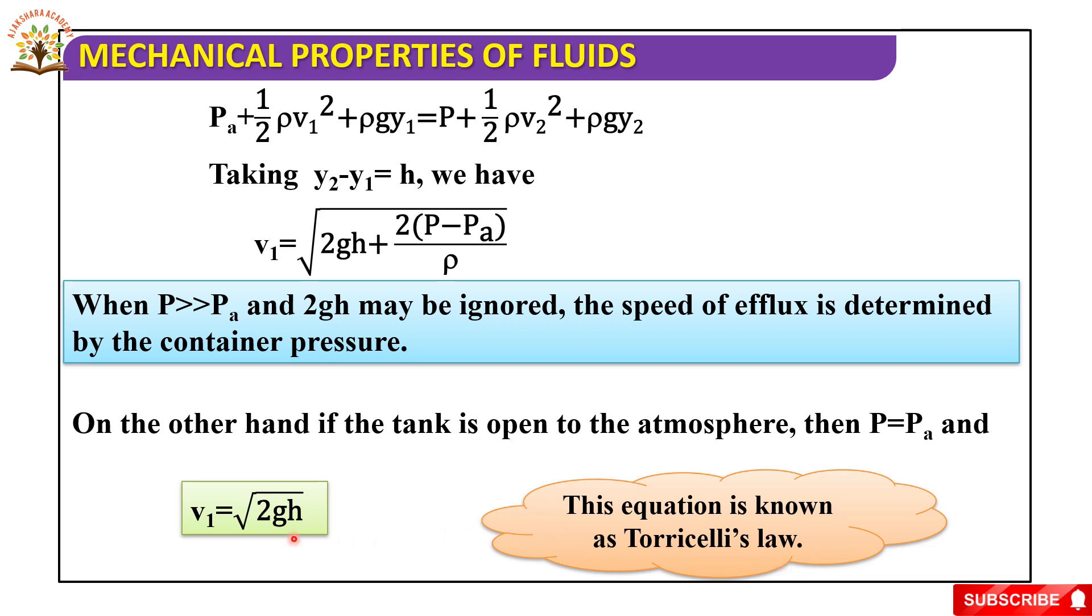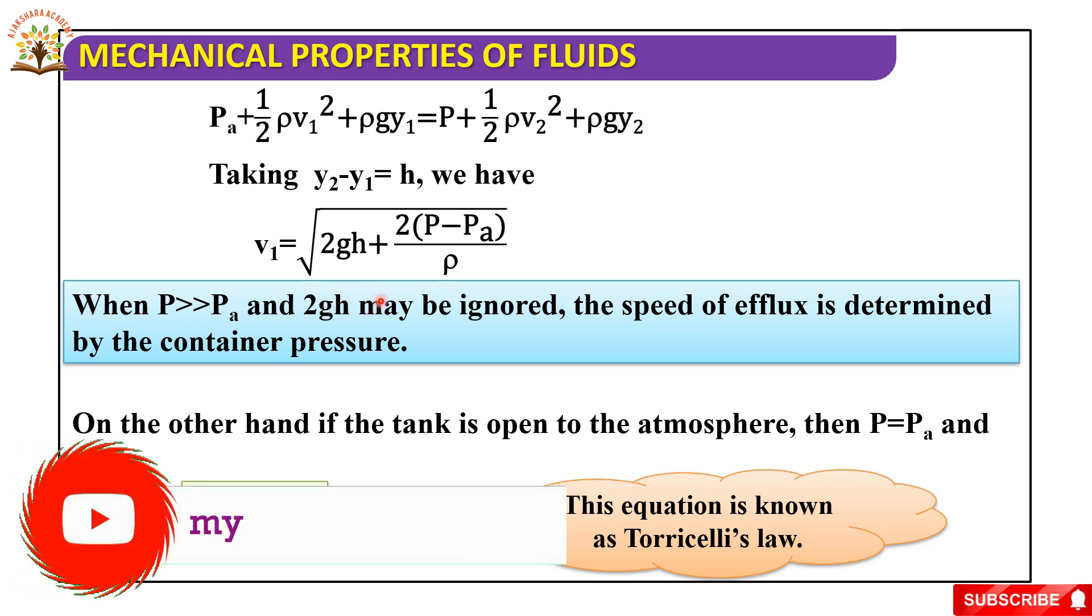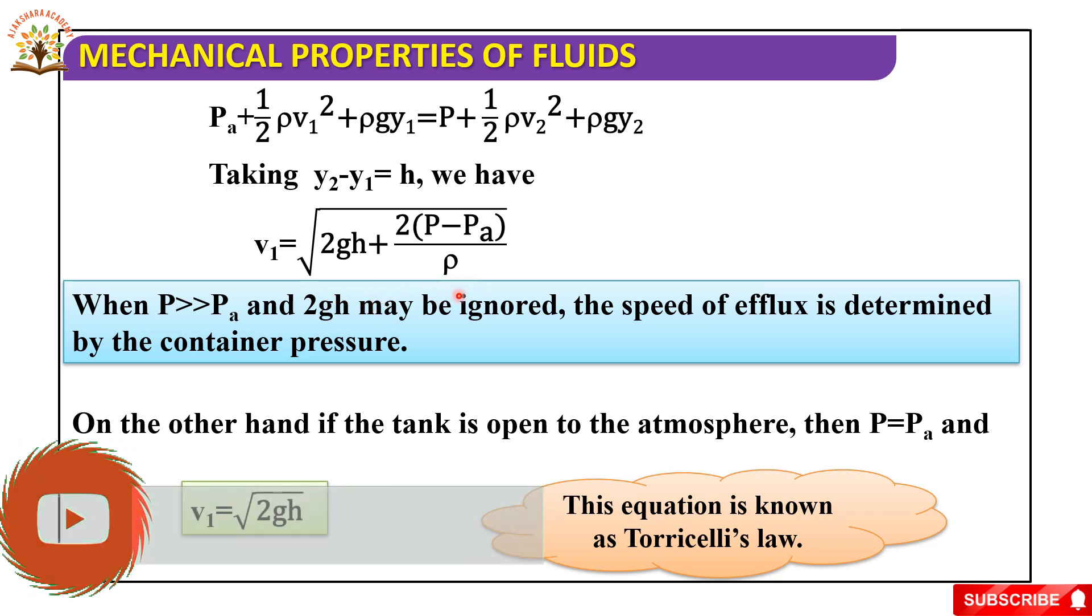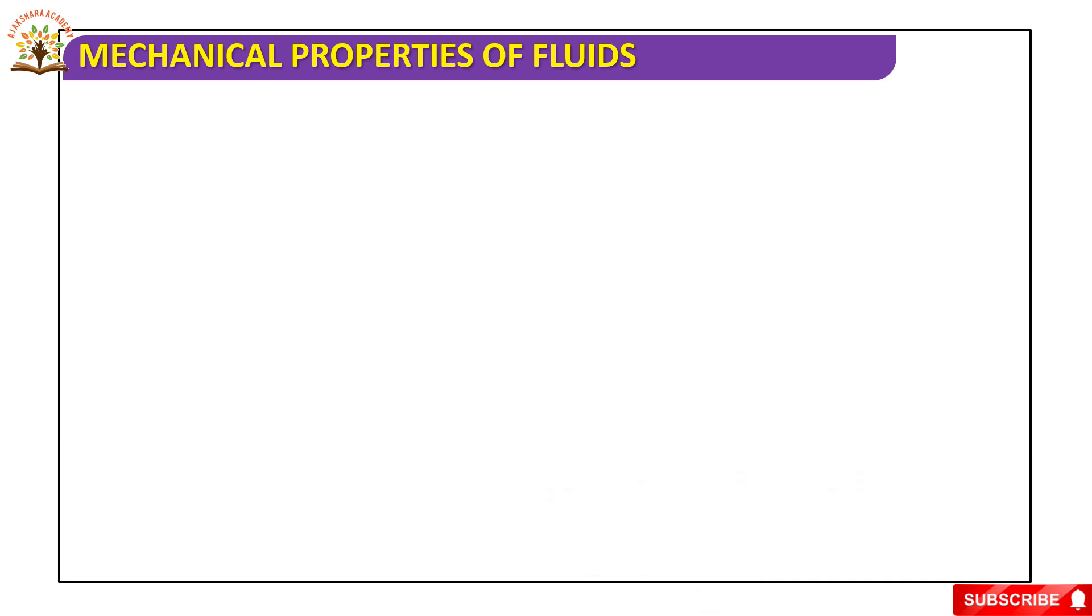This equation is known as Torricelli's law. This equation v1 equals square root of 2gh, in the place of y2 minus y1 substituting h, then the equation becomes v1 equals square root of [2gh + 2(p - pa)/ρ]. This equation is known as Torricelli's law.